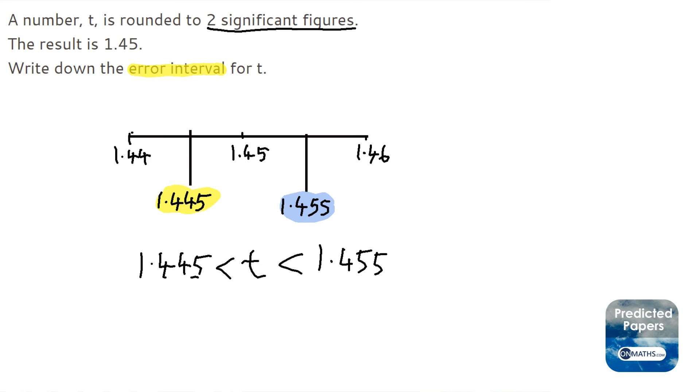There's a slight bit more we've got to do. It could have been equal to 1.445. If you think about it, if it was that number we always round up - remember if the last number is 5 we always round up. But it can't be equal to this one, so we don't put an equal sign there as well.